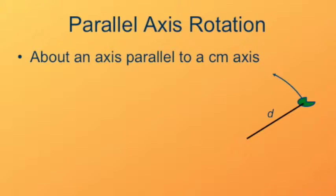But the axis is parallel to an axis that passes through the center of mass for which we do know the moment of inertia of the object. So I sub cm just refers to the moment of inertia of the object if it spins about an axis that goes through the center of mass.